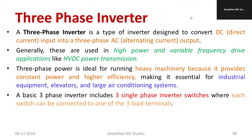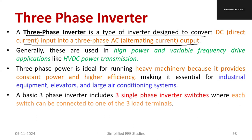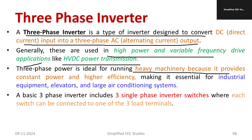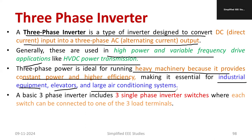A three-phase inverter is a type of inverter designed to convert DC input into three-phase AC. Three-phase AC is suitable for high power and variable frequency drive applications, as well as high voltage DC power transmission. Heavy machines require constant power and higher efficiency. Industrial equipment, elevators, and air conditioning systems also require high power. Such applications cannot be served by single-phase systems, so we go for three-phase systems, producing three-phase AC from DC.